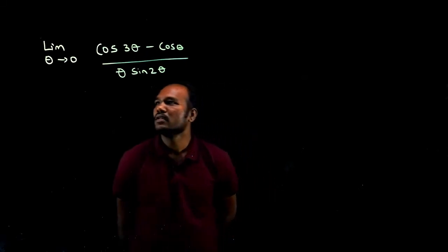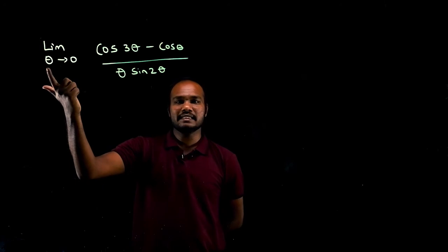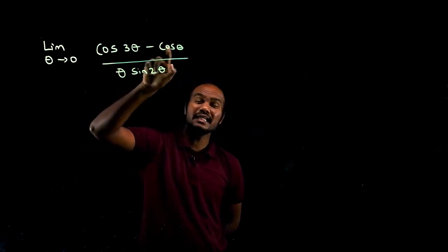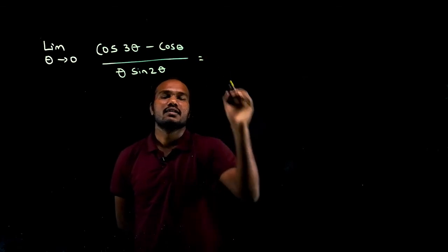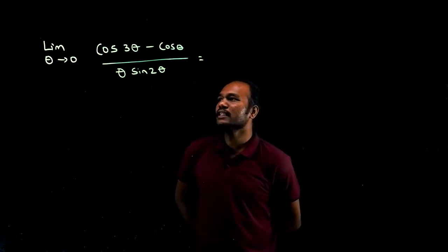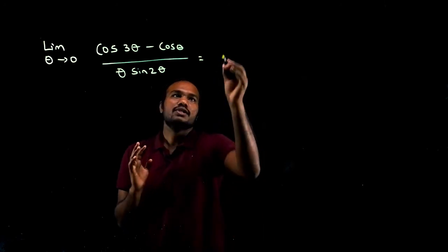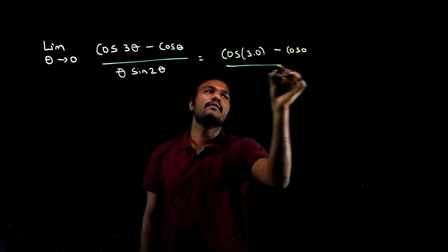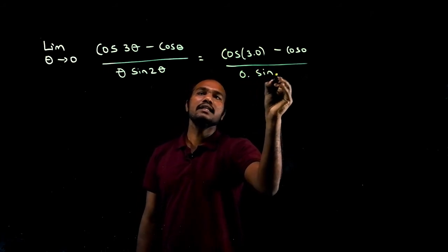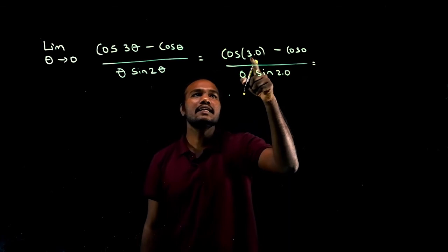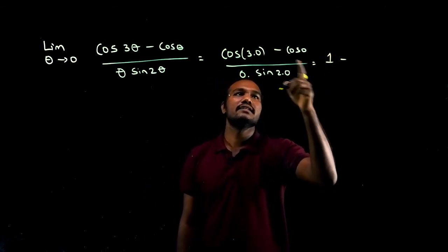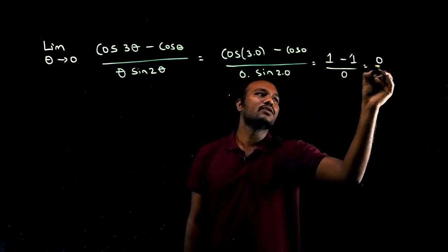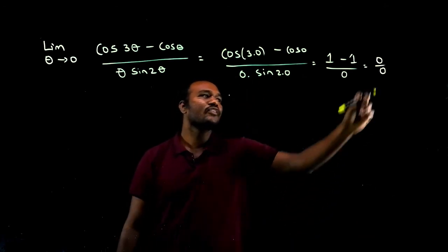Let's go to the next question. What is given? Limit theta tends to 0, variable is theta. The expression is cos 3 theta minus cos theta divided by theta times sin 2 theta. The first thing: substitute the limit. Cos 3 times 0 is cos 0 = 1, minus cos 0 = 1, gives 1 minus 1 = 0 in the numerator. Denominator: 0 times sin 0 = 0. So we have 0 by 0 form.